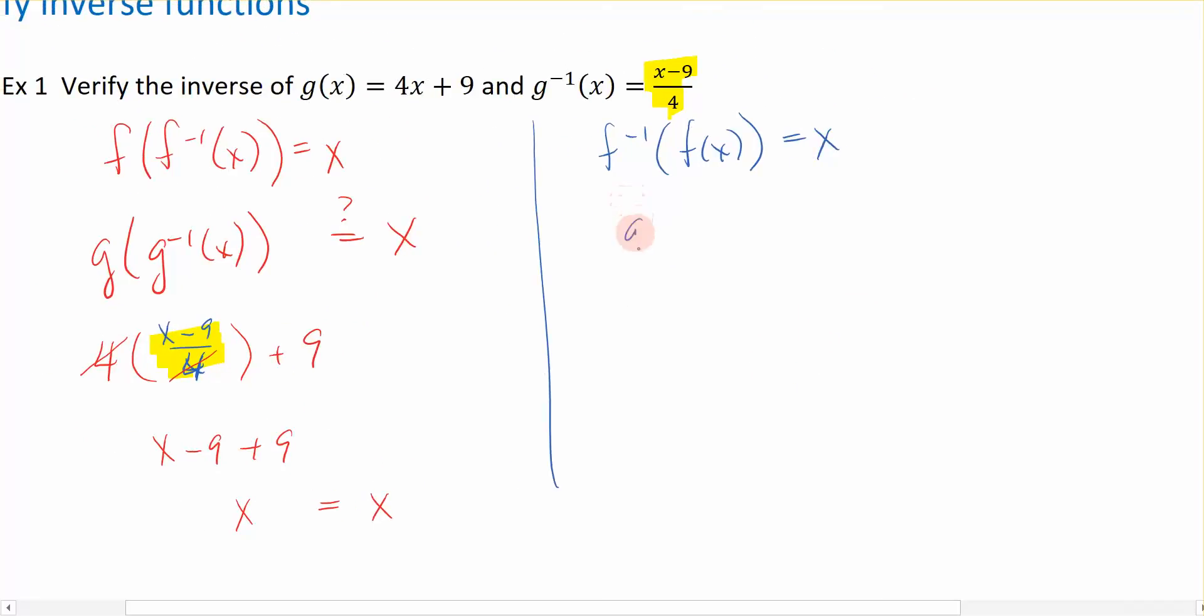So this time, I'm going to start with the inverse function and compose it with g of x and see if that comes out to be x. So g inverse is the fraction, I have x minus 9 over 4. Inside of this set of parentheses, I'm going to replace it with g of x or 4x plus 9.